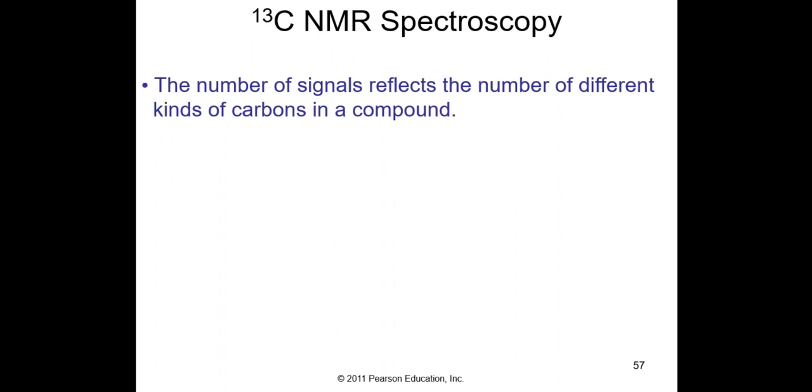With C-13, you appreciate the importance of data on carbon. And with the 1.1%, back in the 70s you would have to collect data over and over for hours. Nowadays, an undergrad could do this in a couple of minutes. Without C-13, I don't know how the field would have progressed. That would include rational drug design and development, structure determination of natural products. The number of signals reflects the number of different kinds of carbons in a compound, and this is good news.